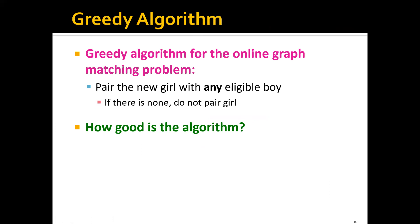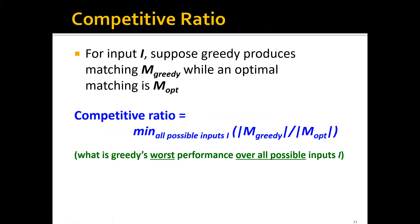One simple and potentially effective algorithm is the greedy algorithm for the online graph matching problem. In the greedy algorithm, you pair the new girl with any eligible boy. If there is no boy available, the algorithm simply skips this girl and moves to the next round. To evaluate this algorithm, we use a metric called competitive ratio. For an input graph, if the greedy algorithm produces matching M_greedy and the optimal matching is M_optimal, the competitive ratio is the minimum over all inputs of |M_greedy| / |M_optimal| — essentially the greedy algorithm's worst-case performance.